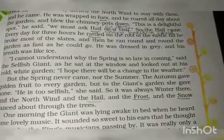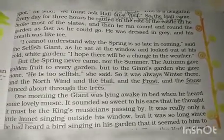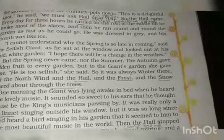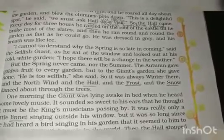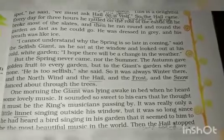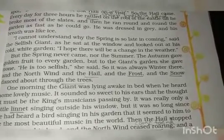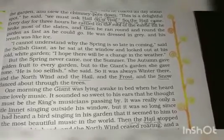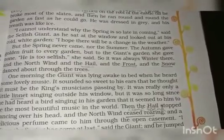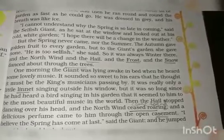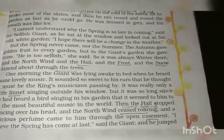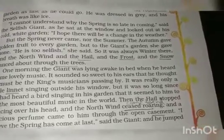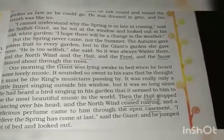'I cannot understand why the spring is so late in coming,' said the selfish giant. He was surprised because spring had already arrived in his surroundings but not in his garden. He sat at the window of his castle and looked out at the cold white garden saying, 'I hope there will be a change in the weather.' But the spring never came, nor the summer. The autumn gave golden fruit to every garden, but to the giant's garden she gave none. 'He is too selfish,' she said — so it was always winter there.